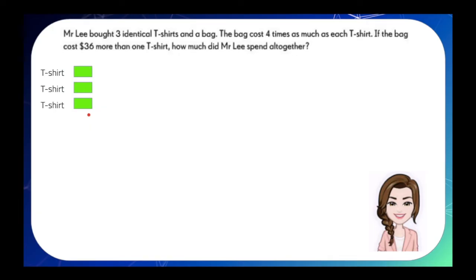Now, we are ready to represent the cost of the bag. It says here that it costs four times as much as each t-shirt. So, we draw four units representing the cost of the bag. There's another clue that was mentioned here. The bag costs $36 more than one t-shirt. So, by looking at the amount of bag and the shirt, we can easily label this part with $36 like this.